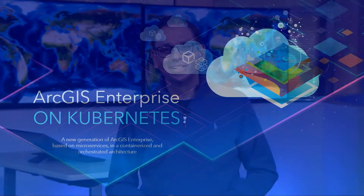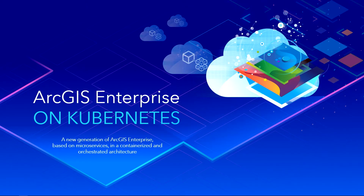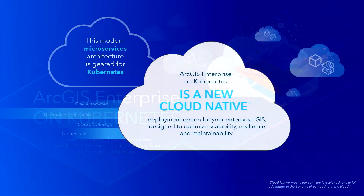We're now going to showcase a new product for the very first time. We're super excited because we've been working on it for a few years now, introducing RTS Enterprise on Kubernetes. It's an architecture that's based on microservices, it's containerized, and it runs in an orchestration fabric. It's a new cloud-native deployment for your enterprise GIS.